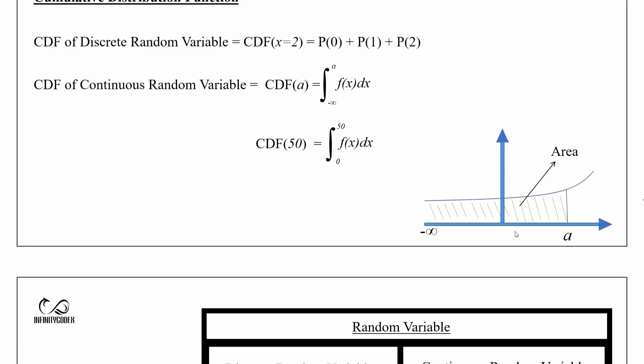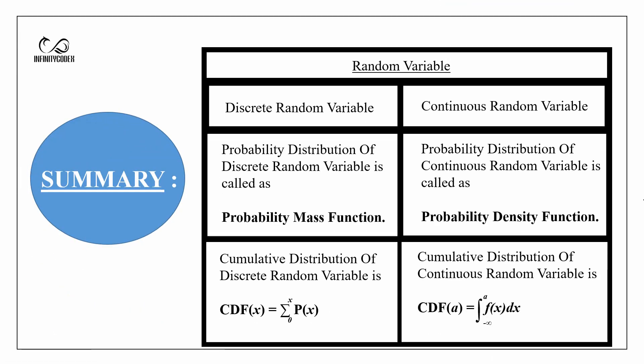In summary, random variable is divided into two parts: first, discrete random variable, and second, continuous random variable. The probability distribution of a discrete random variable is called probability mass function. The probability distribution of a continuous random variable is called probability density function. The formula for the cumulative distribution function of a discrete random variable and the formula for the cumulative distribution function of a continuous random variable are as shown.